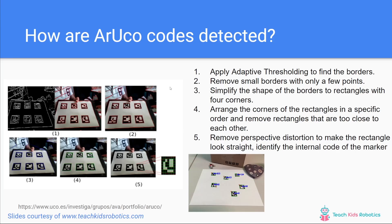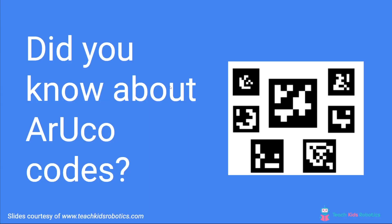This allows us to identify the internal code of the marker. As you can see on this reference image at the bottom, there is a unique code associated with each of these ArUco codes, and if we know where they are in space ahead of time, our position relative to all of these specific codes allows us to determine where we are in space.